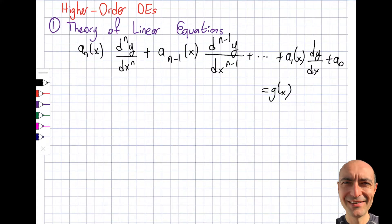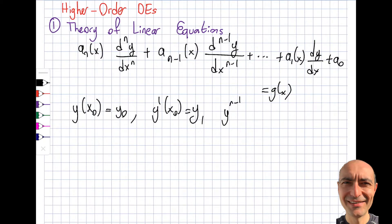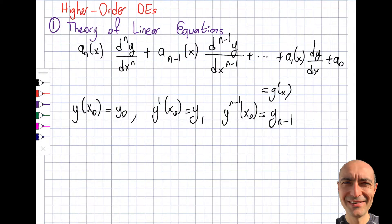If I have some initial conditions — such as y'(x₀) = y₁, and the (n−1)th derivative at x₀ equal to y_{n−1} — these conditions are specified at the exact same point. This is called the initial value problem, or IVP. If instead I use x₀, x₁, x₂, etc. at different points, I will have something called a boundary value problem, which I'll get back to.